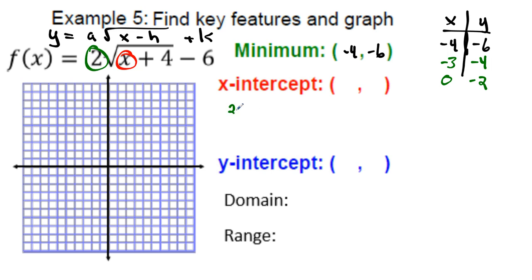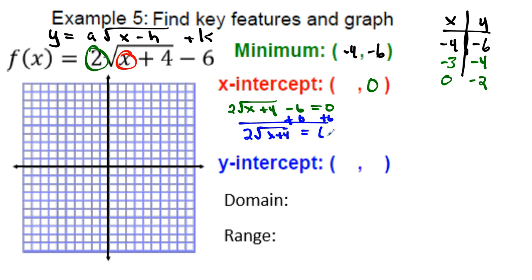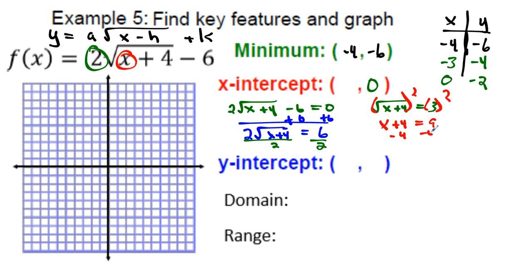Use your calculator to verify the table values. For the x-intercept, set the equation equal to zero and solve: add 6 to both sides to get 2√(x + 4) = 6, divide by 2 to get √(x + 4) = 3, square both sides to get x + 4 = 9, subtract 4, so x = 5. The x-intercept is (5, 0).